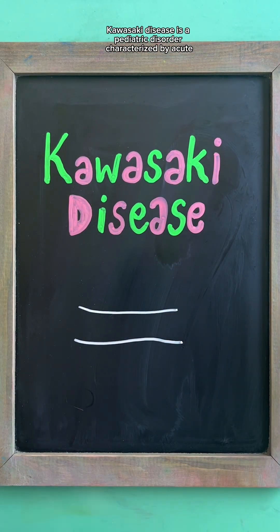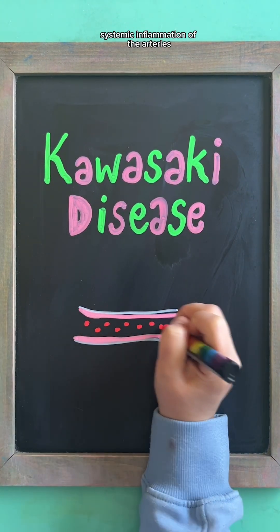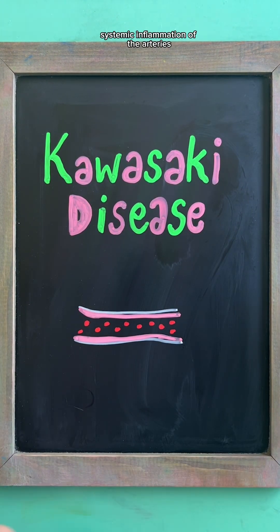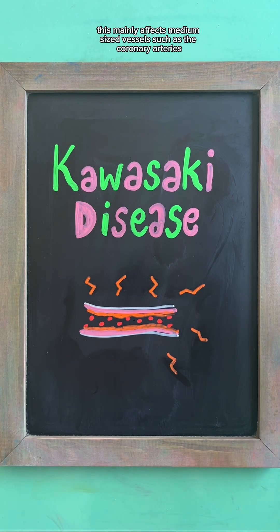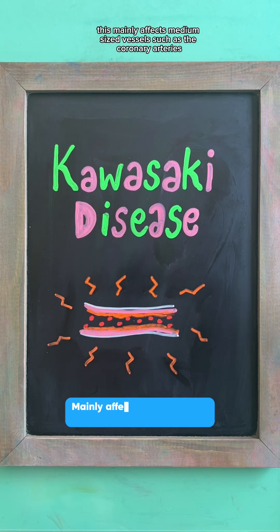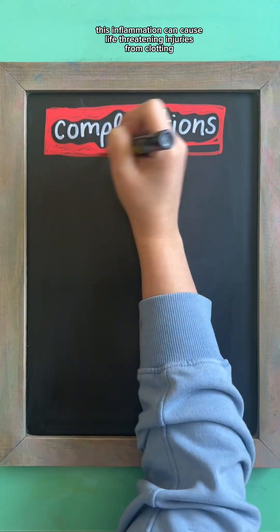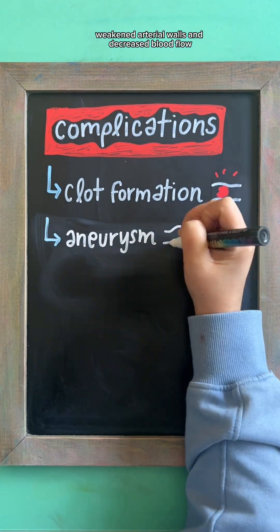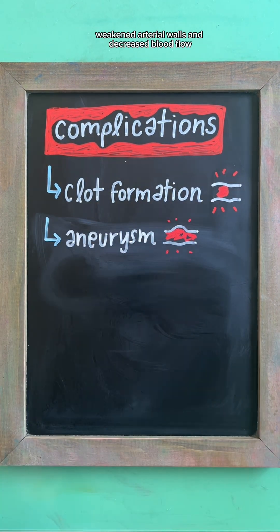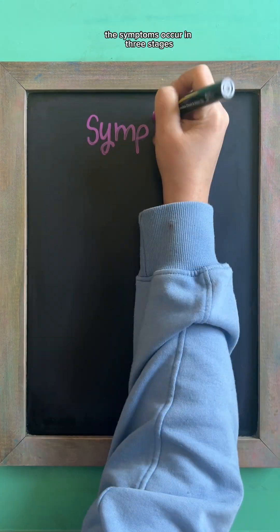Kawasaki disease is a pediatric disorder characterized by acute systemic inflammation of the arteries, and more specifically, this mainly affects medium-sized vessels such as the coronary arteries. This inflammation can cause life-threatening injuries from clotting, weakened arterial walls, and decreased blood flow, so it's important to address it promptly.